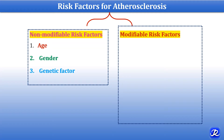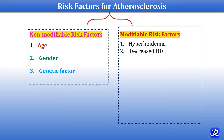Now let's enumerate modifiable risk factors. The first and most important is hyperlipidemia, and more specifically hypercholesterolemia. It is the major risk factor for development of atherosclerosis and is sufficient to induce lesions in the absence of any other risk factors. Increased cholesterol level and increased LDL are risk factors, while decreased HDL — which is involved in reverse cholesterol transport — is also a most important risk factor when it is low or dysfunctional.